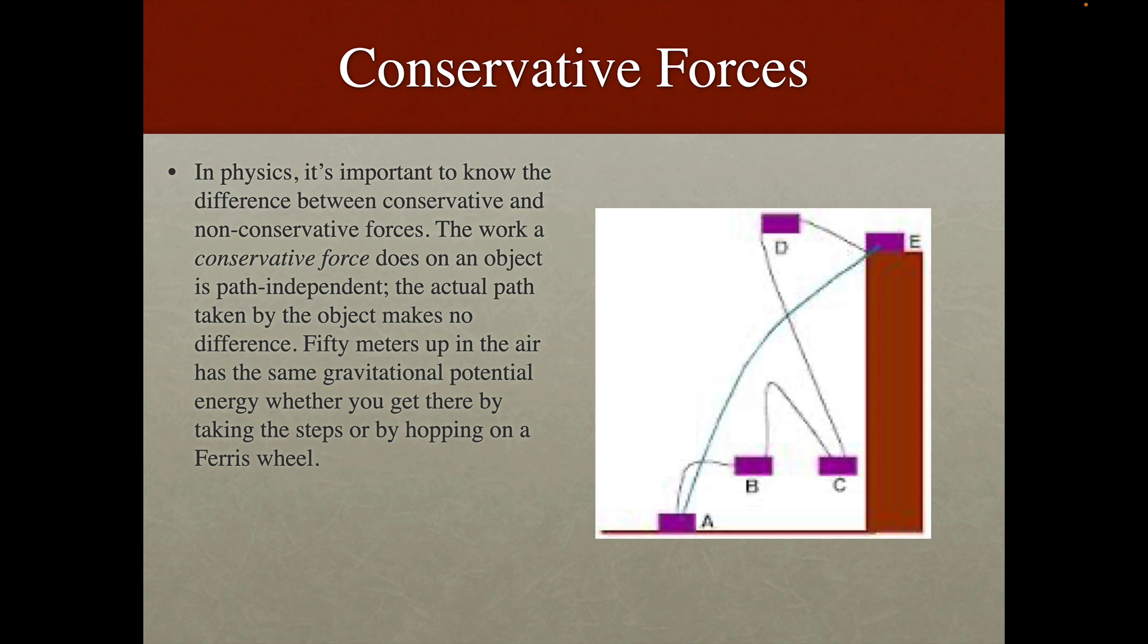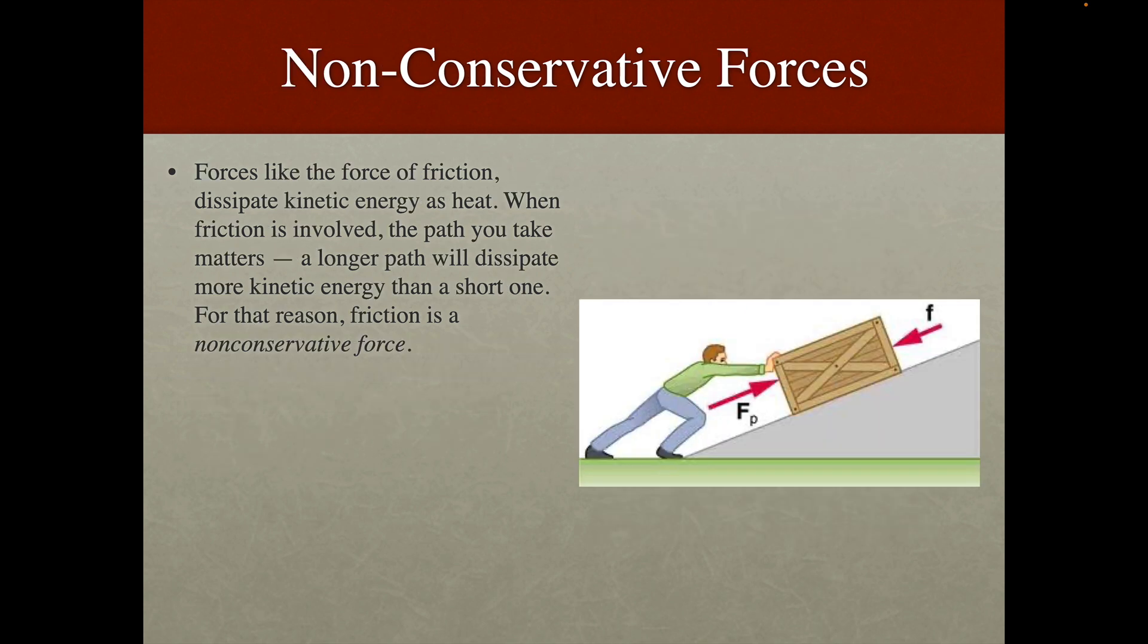Now in physics, it's important to know the difference between a conservative and non-conservative force. The work a conservative force does on an object is path independent, so the actual path taken by the object makes no difference. 50 meters up in the air has the same gravitational potential energy whether you get there by taking the steps or by hopping on a Ferris wheel. Non-conservative forces, forces like the force of friction, dissipate kinetic energy as heat. When friction is involved, the path you take matters. The longer path will dissipate more kinetic energy than a short one, and for that reason, friction is a non-conservative force.